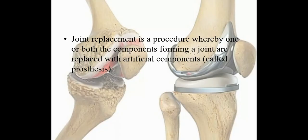TKR, or total joint arthroplasty, or total knee replacement, is a very vast topic. In this video I have tried to give a brief outline about total knee replacement. Joint replacement is a procedure whereby one or both the components forming a joint are replaced with an artificial component, called a prosthesis.